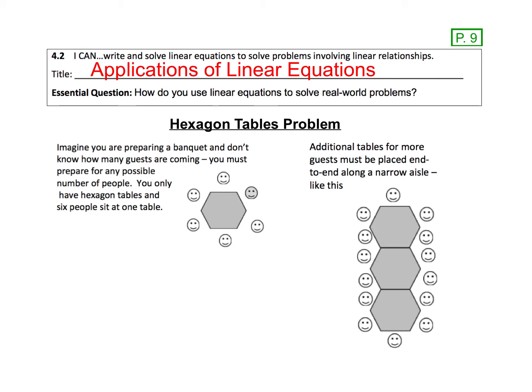We're going to look at two different types of problems today. Our first problem involves hexagonal tables. Let's start by reading the description here. Imagine you're preparing a banquet and you don't know how many guests are coming. You must prepare for any possible number of people. You only have hexagon tables and six people sit at one table. But if we need to add additional tables for more guests, those must be placed end-to-end along a narrow aisle.